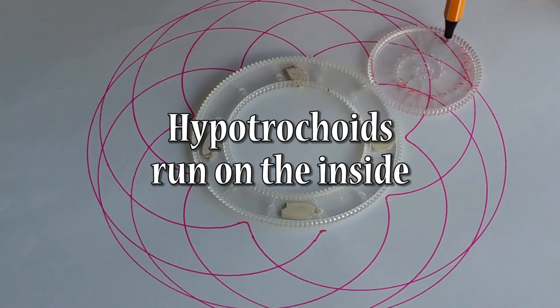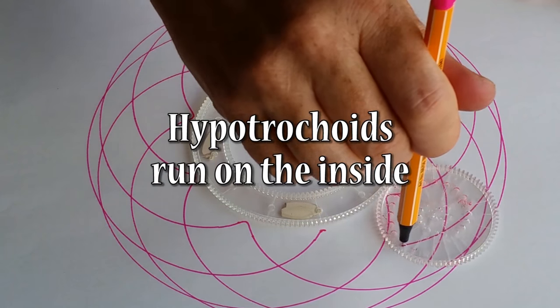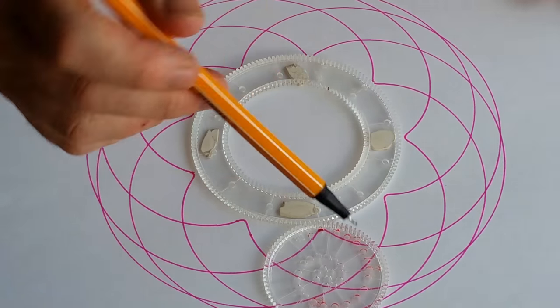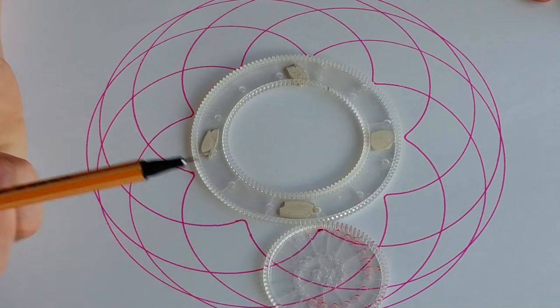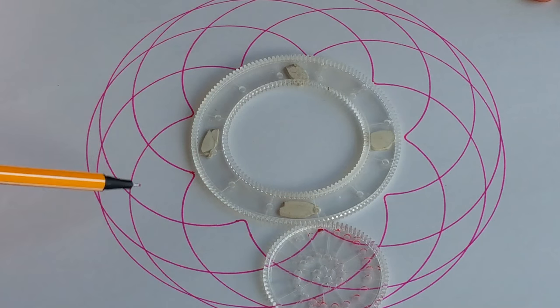So that was wheel number 80 going around the outside of this ring, and I can make a variation on that by using another color.